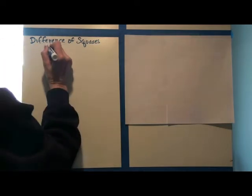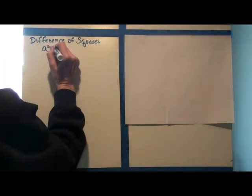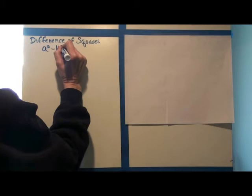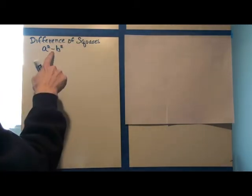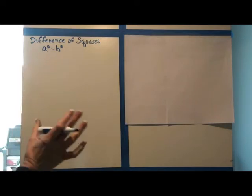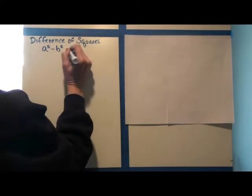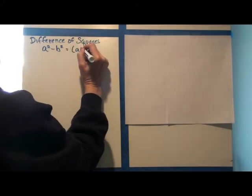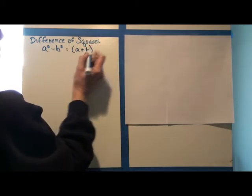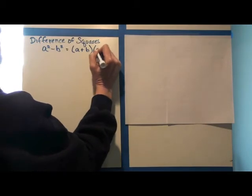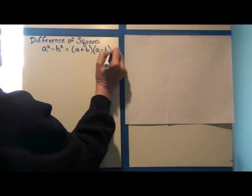Basically we have a formula that you've been using that says if you have two perfect squares and they are subtracted, so you have a difference of squares, those can easily be factored into the square root plus the square root, times the square root minus the square root.